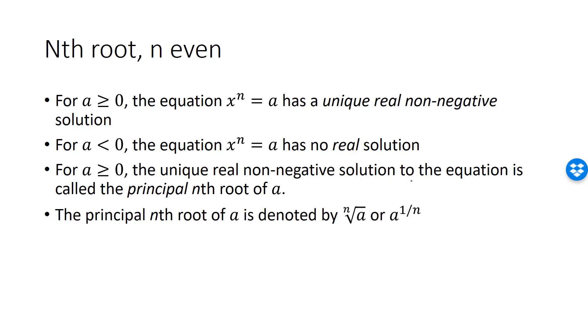We use the following notation for the nth root of a: either the radical sign √ or we write it as a power with the exponent 1/n.